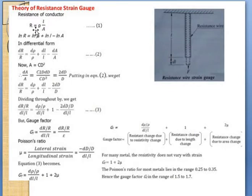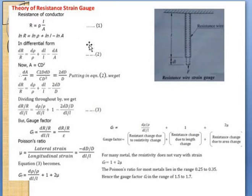The resistance of the conductor is R = ρL/A. Taking the logarithm on either side: ln R = ln ρ + ln L − ln A. In differential form, this becomes: dR/R = dρ/ρ + dL/L − dA/A.